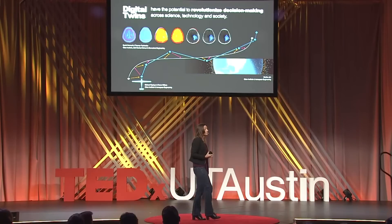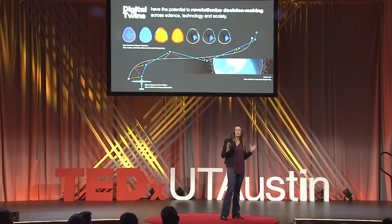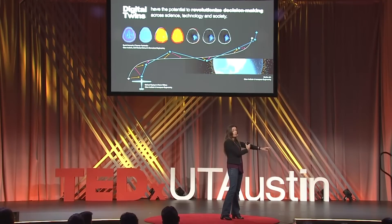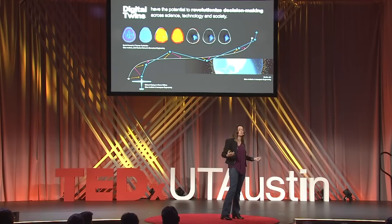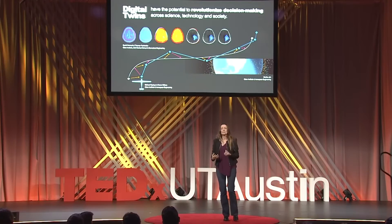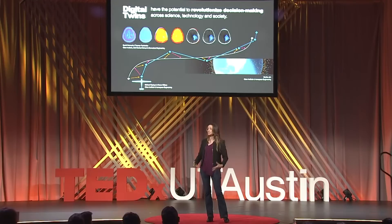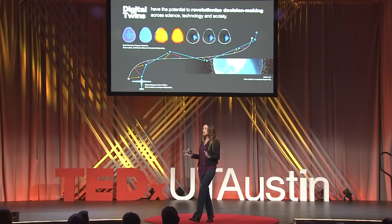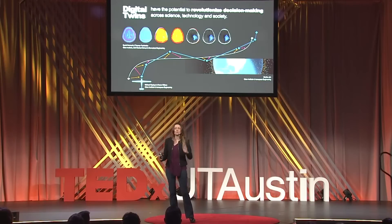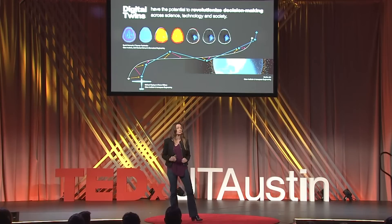Let's think for a minute about why it's so challenging. One reason is because of the scales that these systems cross. If you think about my aircraft, damage at the microscopic level on the material of the wing translates across scales to impact the way the vehicle flies at the vehicle level. In medicine, changes at the molecular or cellular level in our bodies translate across scales to have impacts at the system level — the human level. And computational models that resolve all of these scales from the micro scale all the way up to the system level are computationally intractable. We can't solve them even with today's supercomputing power.